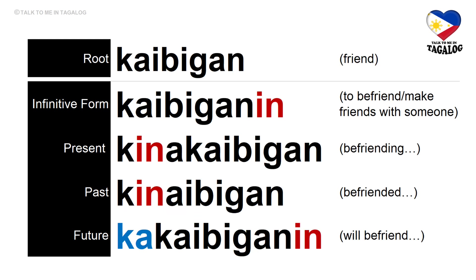Root word: kaibigan — meaning a friend. Infinitive form: kaibiganin — to befriend or make friends with someone. Present tense: kinakaibigan — befriending someone. Past tense: kinaibigan — befriended someone. Future tense: kakaibiganin — will befriend someone.